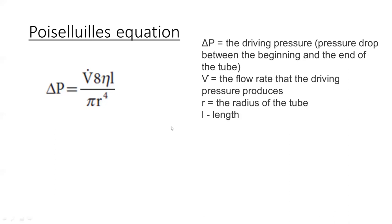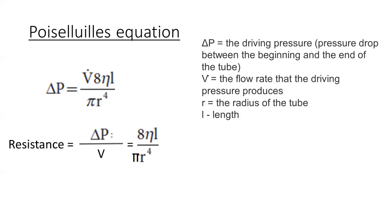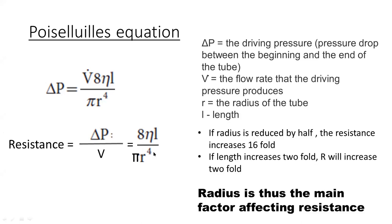Moving to Poiseuille's equation, which is important because resistance is derived from it: the change in pressure is directly proportional to the length and flow rate, and inversely proportional to the radius. Resistance equals the change in pressure divided by flow rate. The critical point is that resistance is inversely proportional to the fourth power of the radius — so if the radius is reduced by half, resistance increases 16-fold. Therefore, although length is a factor, the radius of the tube is the main determinant of resistance.